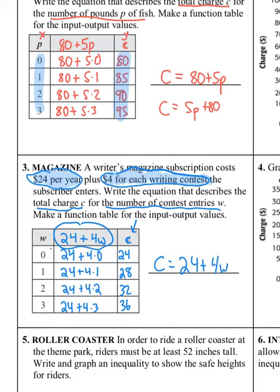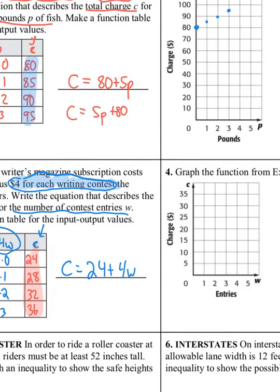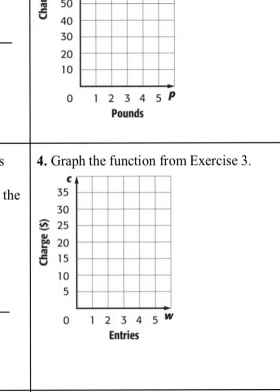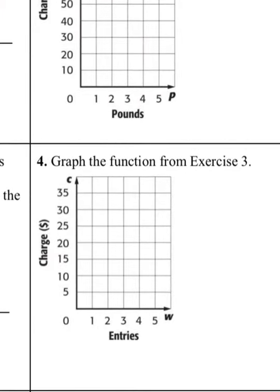Our equation is C equals 24 plus 4W — you can also write it as 4W plus 24. When we graph the function, the W values are X and the C values are Y: (0, 24), (1, 28), (2, 32), (3, 36). Zero contests is $24, one contest is $28, two contests is $32, and three contests is $36. Notice that's a linear function.